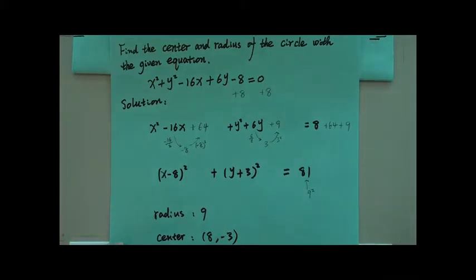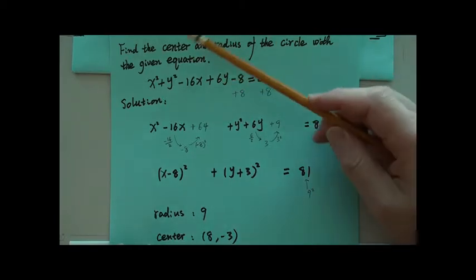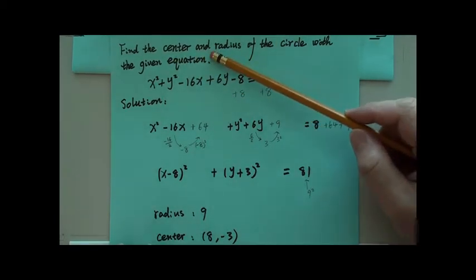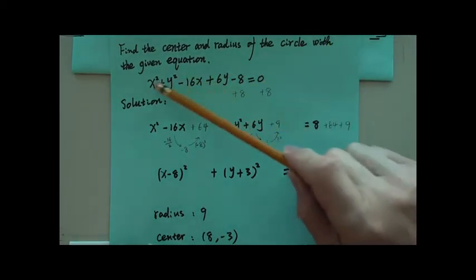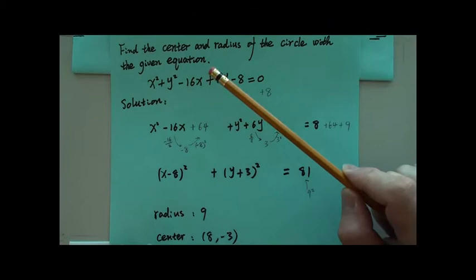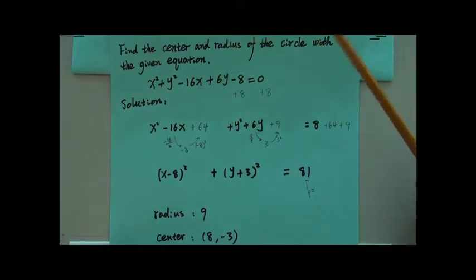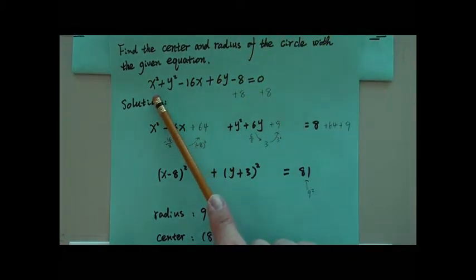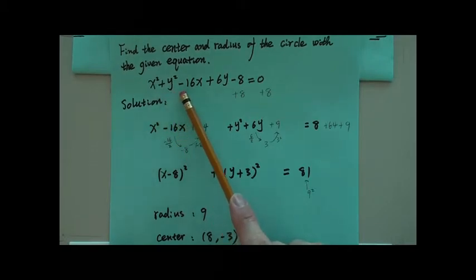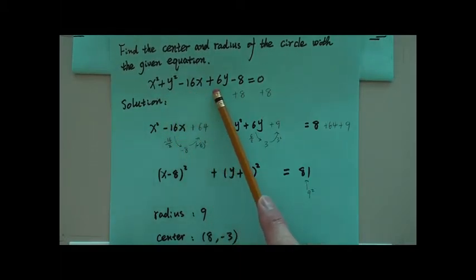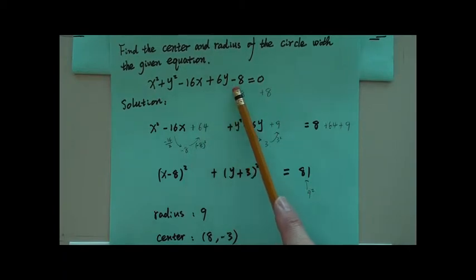Now let's look at this question finding the center and radius of the circle with the given equation. This given equation is x squared plus y squared minus 16x plus 6y minus 8 equals zero.